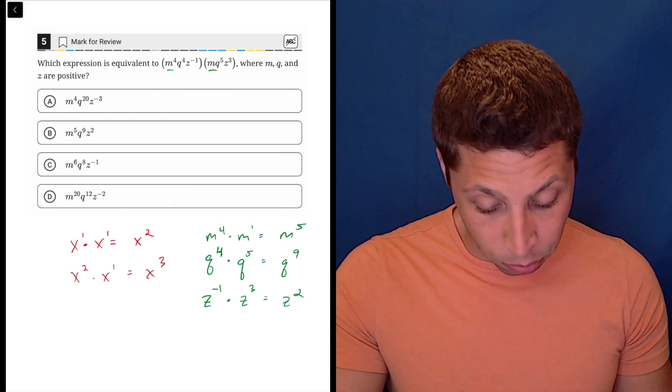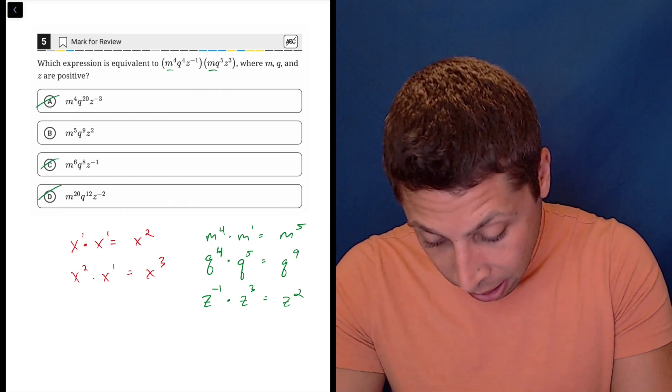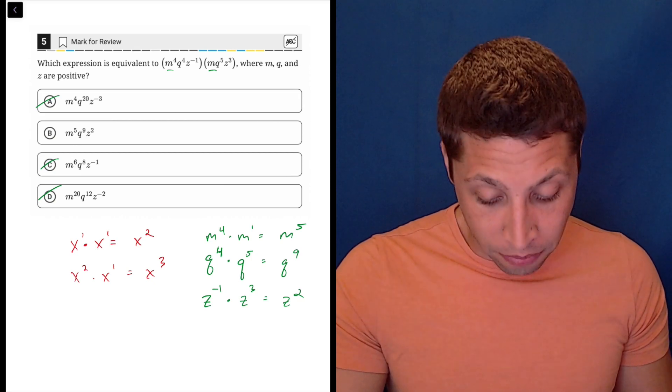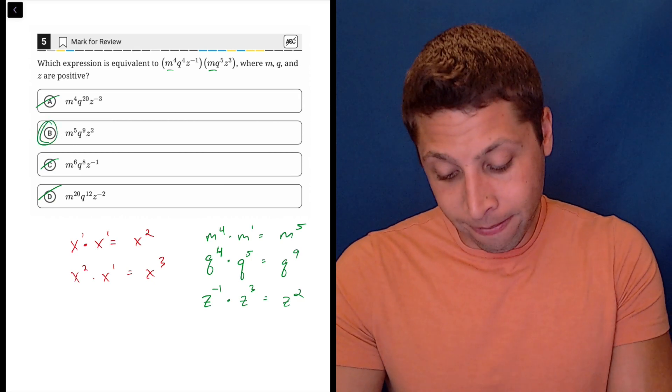So now we're just looking for an answer with that. I can see it looks like it's going to be B. This is m to the fifth, q to the ninth, z squared. Done.